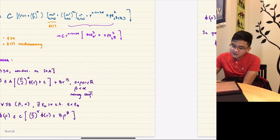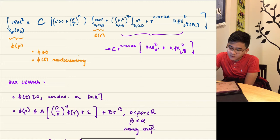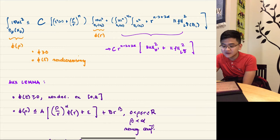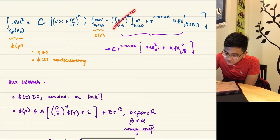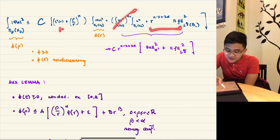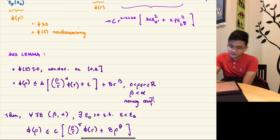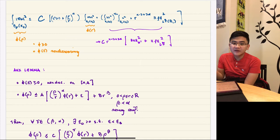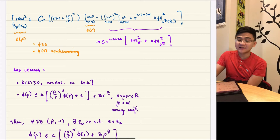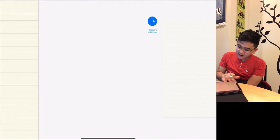The proof splits into two cases, hinging on whether c is zero or not. The case when c equals zero is easy: if c is zero you're just left with a term that already has a power of r and another term that looks like the desired form. So the case c = 0 is a direct application of the lemma — no bootstrap argument needed — and in fact the estimate you get is slightly different.